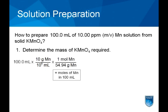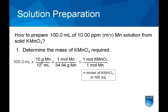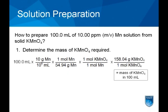The first step is to determine the required mass of manganese in the final solution. From this value, the moles of manganese, the moles of potassium permanganate, and then finally the mass of potassium permanganate required for preparing 100 milliliters of solution.